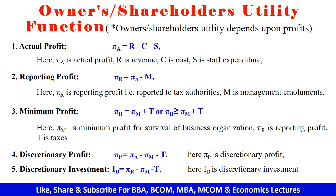The reporting profit should cover the minimum profit and the taxes. Then the fourth one is the discretionary profit — if we subtract the taxes and minimum profit from actual profit, we get the discretionary profit. The last one is the discretionary investment, denoted by IT. If we subtract the minimum profit and the taxes from the reporting profit, we get the discretionary investment.